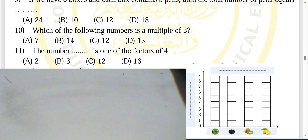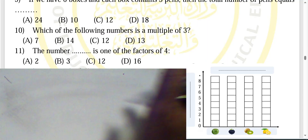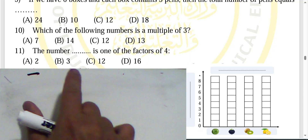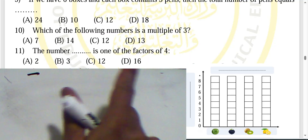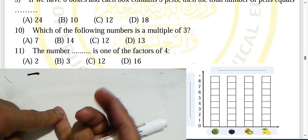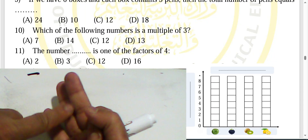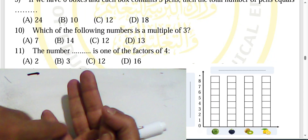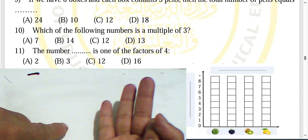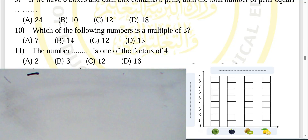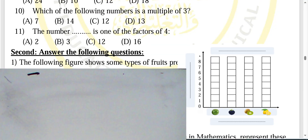Question eleven: is two a factor of four? Four can be divided by one, by two, and by itself, so we have three factors of four. Two is indeed one of the factors of four — choose letter E.